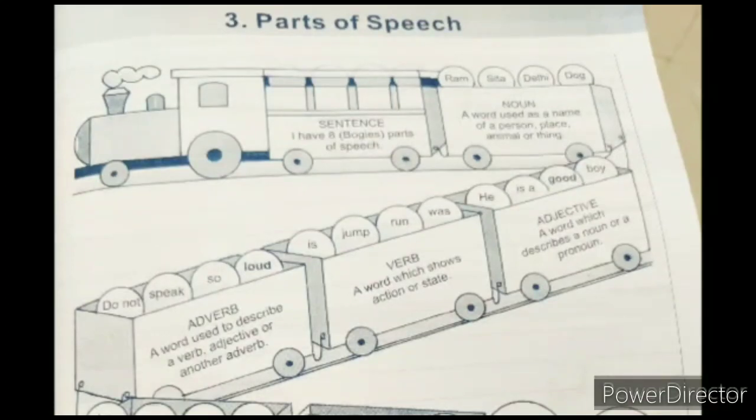Now next we'll study about verb. What is a verb? A verb is a word which shows action or state. In short, you can remember it by keeping in your mind that doing words or action words are called verbs. Like jump, run, reading, writing. All these are verbs. There are auxiliary verbs also which are known as helping verbs. Helping verbs is was, are verbs. So these are auxiliary verbs.